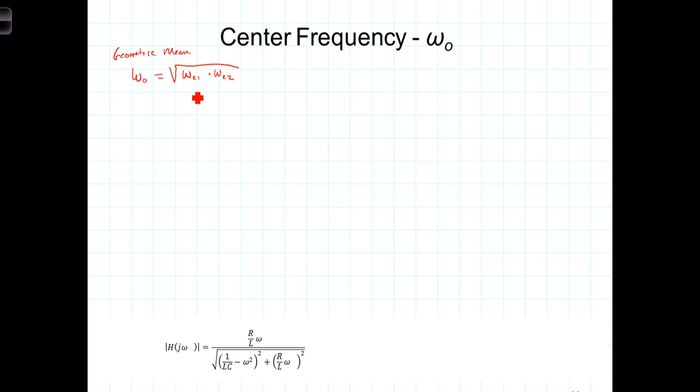We're not calculating the arithmetic mean. Omega-0 is not the average of those two. It's the geometric mean, or the geometric average, which is calculated by taking the square root of the product of those two.